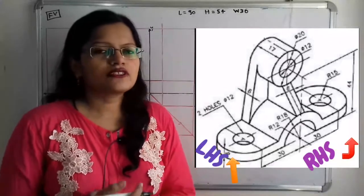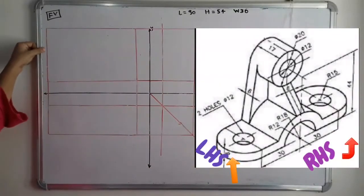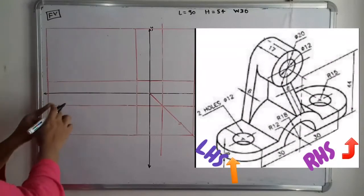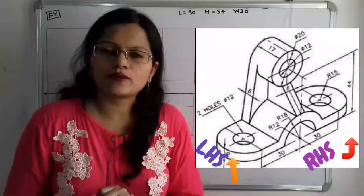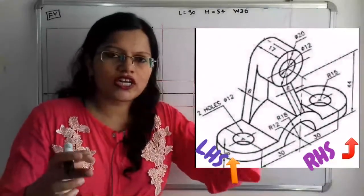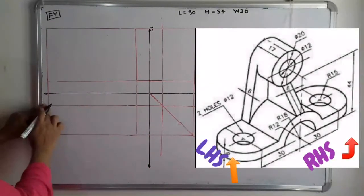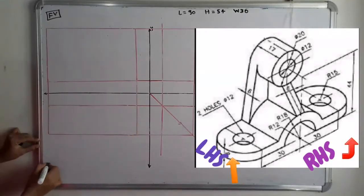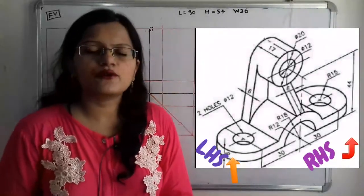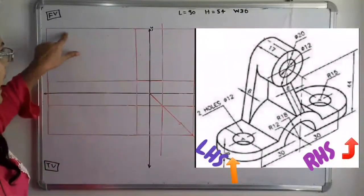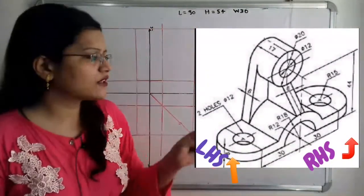Now we move to the top view. The top view is vertically aligned with the front view, so we project the outline lines from the front view downward to the top view — the length of the front view aligns with the top view. When we see the object from the top we can clearly see the total length and total width. The width is 30 millimeters, so we take that distance and complete this block as the top view. The side view is horizontally aligned with the front view, so we project lines from the front view horizontally to the side view.